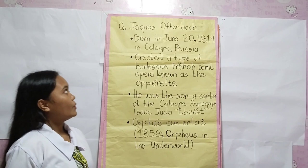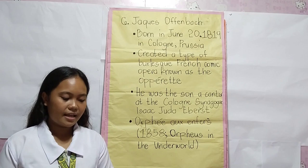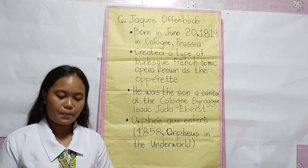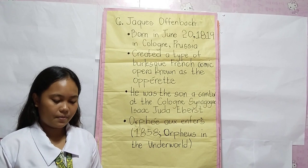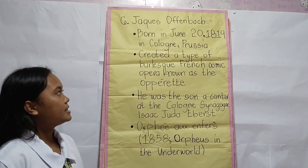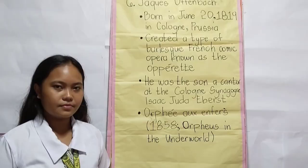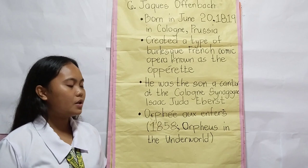Jacques Offenbach was born on June 20, 1819 in Cologne, Prussia. He was a German-born French composer, cellist, and impresario — a conductor of opera of the Romantic period, and the most important writer of music in the 19th century. His original name was Jacob Eberst; his father changed their surname to Offenbach. He created a type of wordless French comic opera known as operetta, becoming the first person to compose operettas, which became one of the most characteristic artistic products of the period. Examples include La Colombe Blanche and La Belle Hélène.